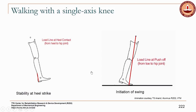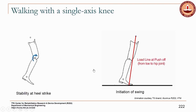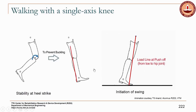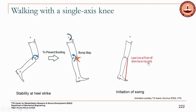In this animation, for a single axis knee, if the load line is behind the knee then the moment at the knee joint will tend to make it buckle. To prevent the buckling, the user applies a hip extension moment which causes it to hit the bump stop, locking the knee by contacting the bump stop, and that moves the load line so it now generates an extension moment about the knee.